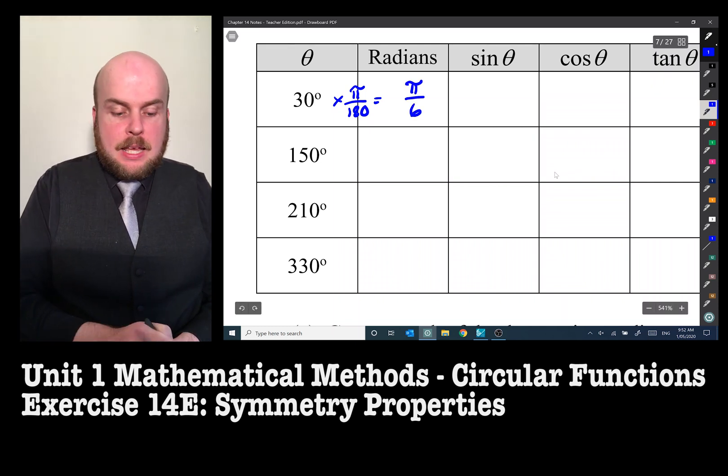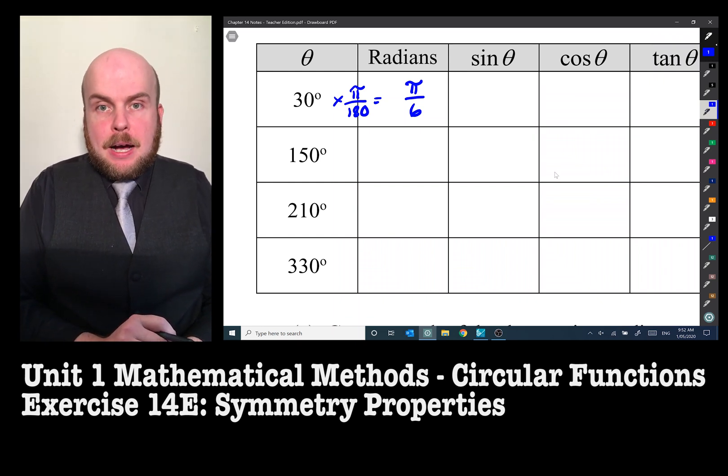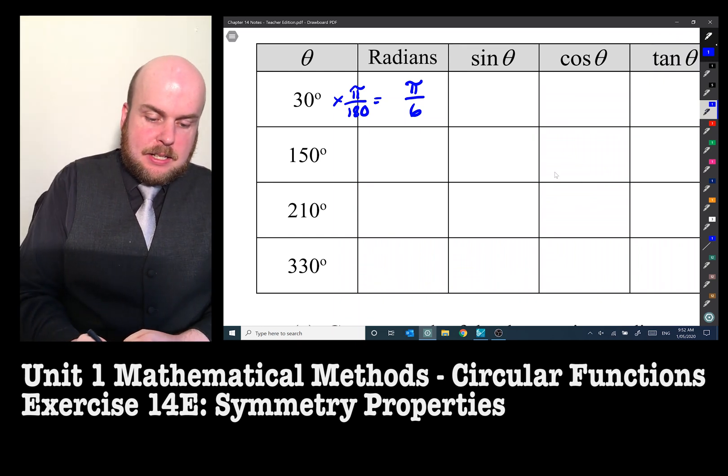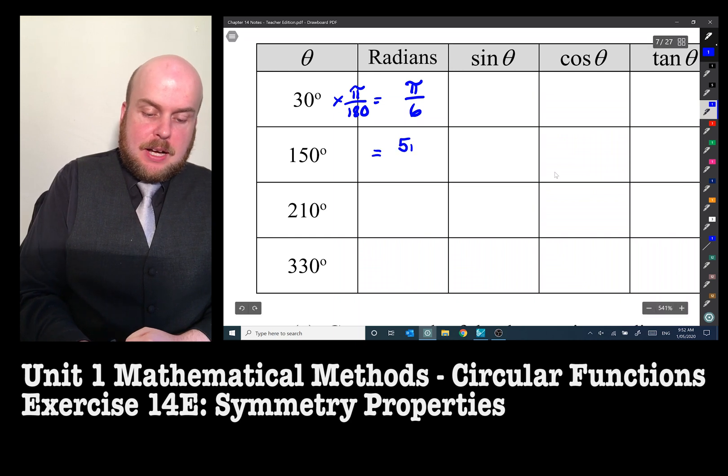For 150, again we times it by π over 180, and that will get us to 5π on 6.